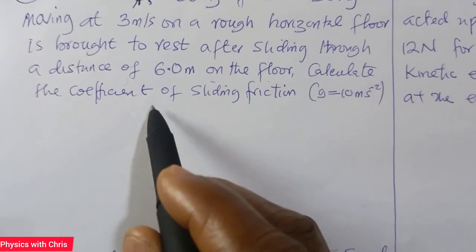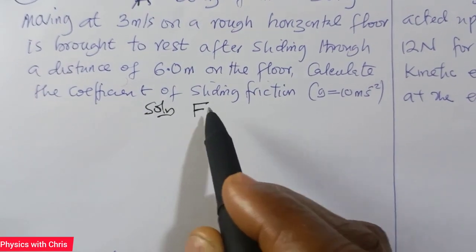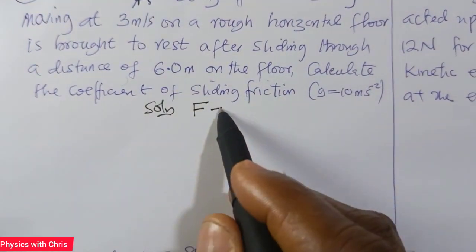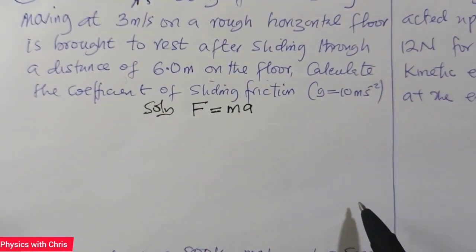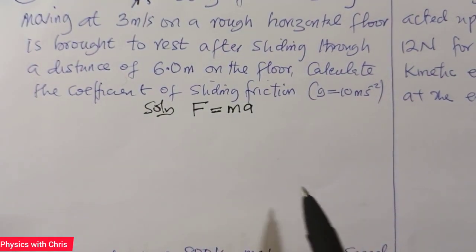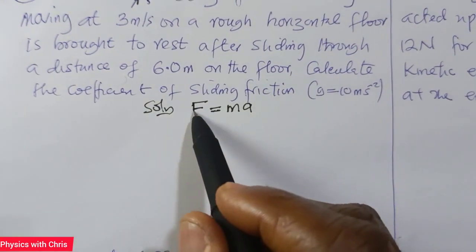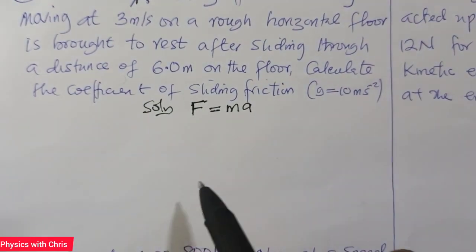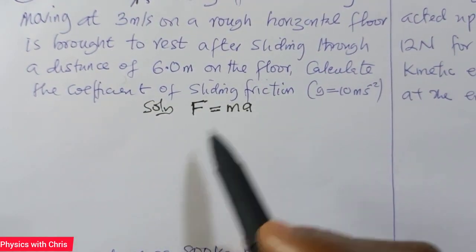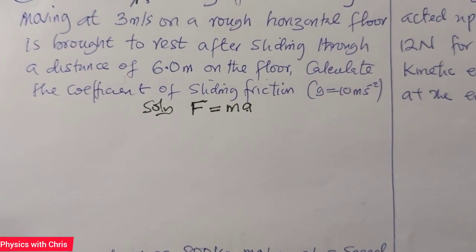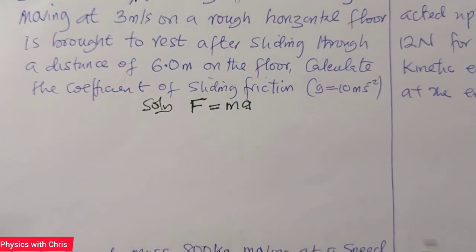Using Newton's second law of motion, that is the resultant force — or the accelerating force — equals the product of mass and acceleration. The F here represents the accelerating force, meaning that A is the acceleration of the body. So I need to find A using one of the equations of motion.